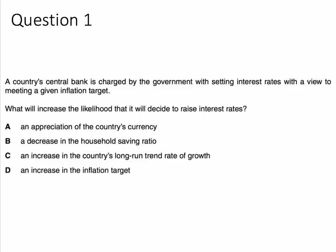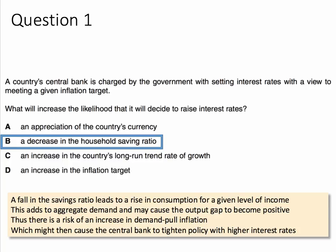The correct answer to question one is B, a decrease in the savings ratio. A fall in the savings ratio leads to a higher level of consumption for a given level of disposable income. And if people are consuming more, that's going to add to aggregate demand, and that could cause the output gap in the economy to become positive. When that happens, there's a risk of an increase in demand-pull inflation, and that could trigger the central bank to tighten policy with higher interest rates.